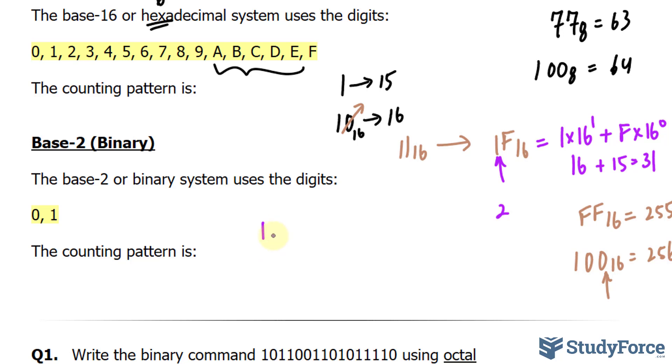To write the number 2, since we can only use digits between 0 and 1, we would introduce a new place value. So I would have 1, 0, sub 2. Expanding this is the same thing as saying 1 times 2 raised to the power of 1 plus 0 times 2 raised to the power of 0. Multiplying and adding, we would end up with the number 2.